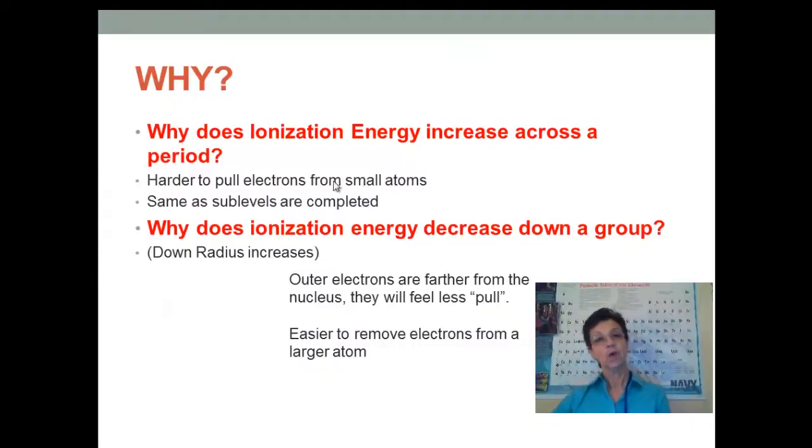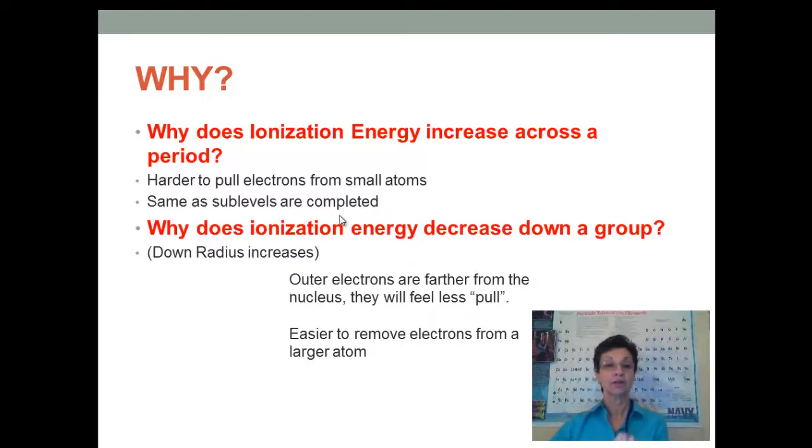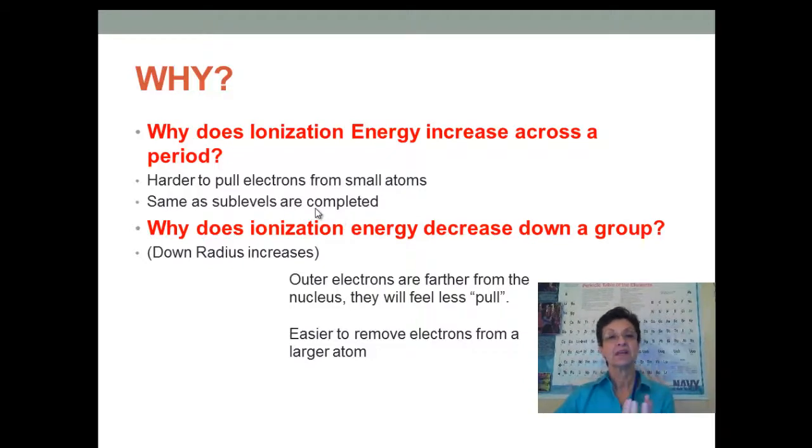So, I have already explained why the ionization energy, you might want to jot it down. Why does the ionization energy increase across a period? It's harder to pull the electrons from a small atom because the nucleus is in control. Some levels are completed. The same thing happens. It is harder and harder to remove those electrons, the more of those orbitals that are filled.